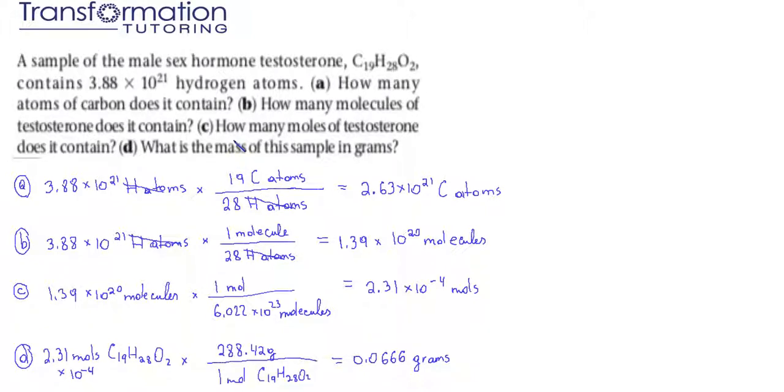Part C: How many moles of testosterone does it contain? To convert between moles, it is easier to use molecules. The number we will use is Avogadro's number, which is the number of molecules, particles, or atoms in one mole of something. If we calculated in the previous example that we have 1.39 times 10 to the 20 molecules, we can easily convert it to moles by using Avogadro's number.